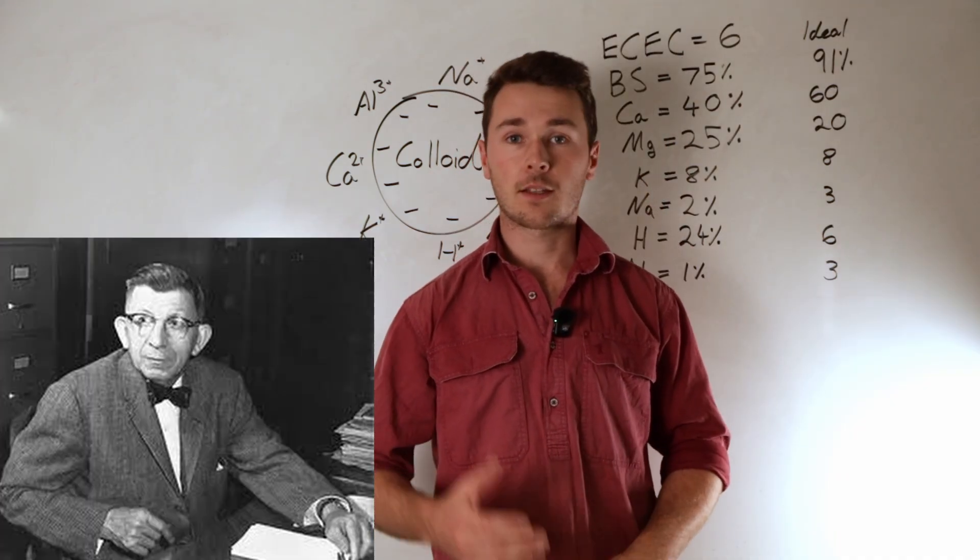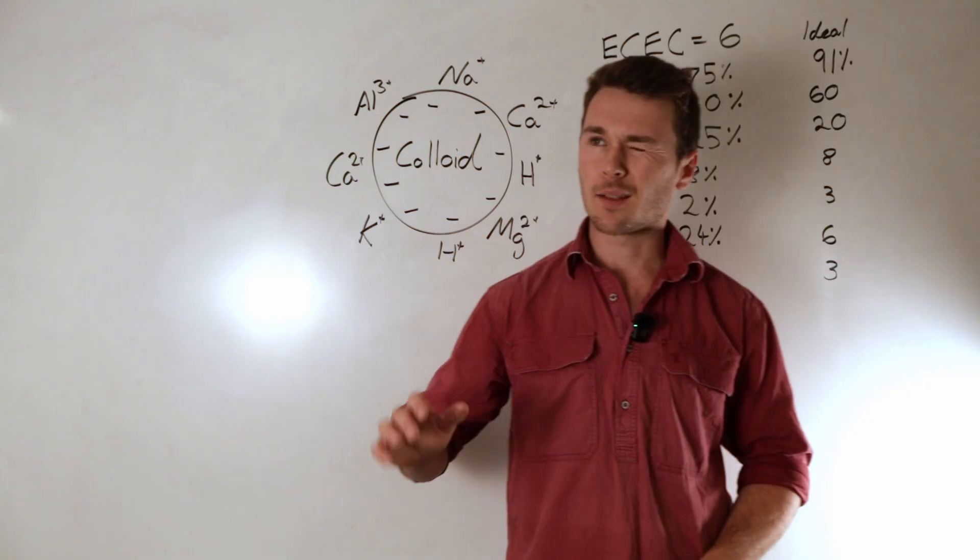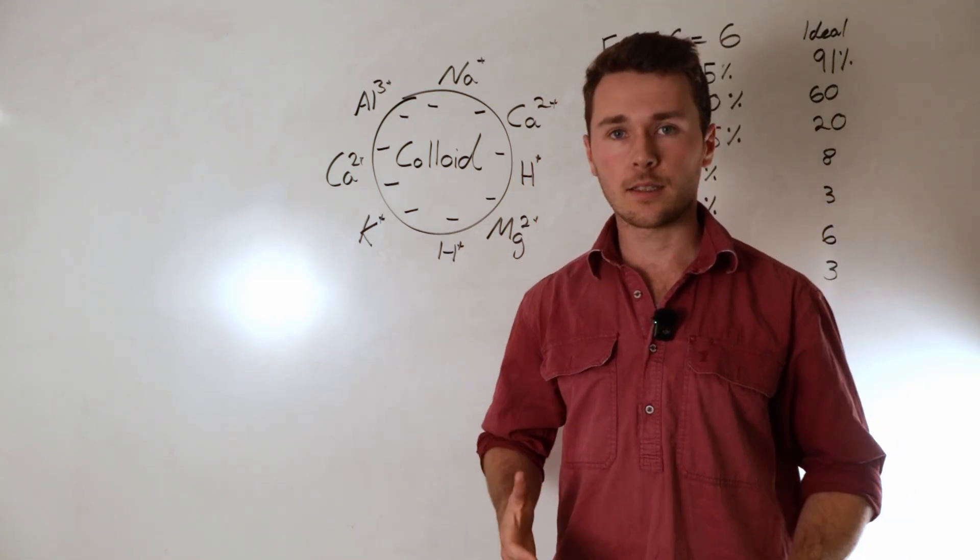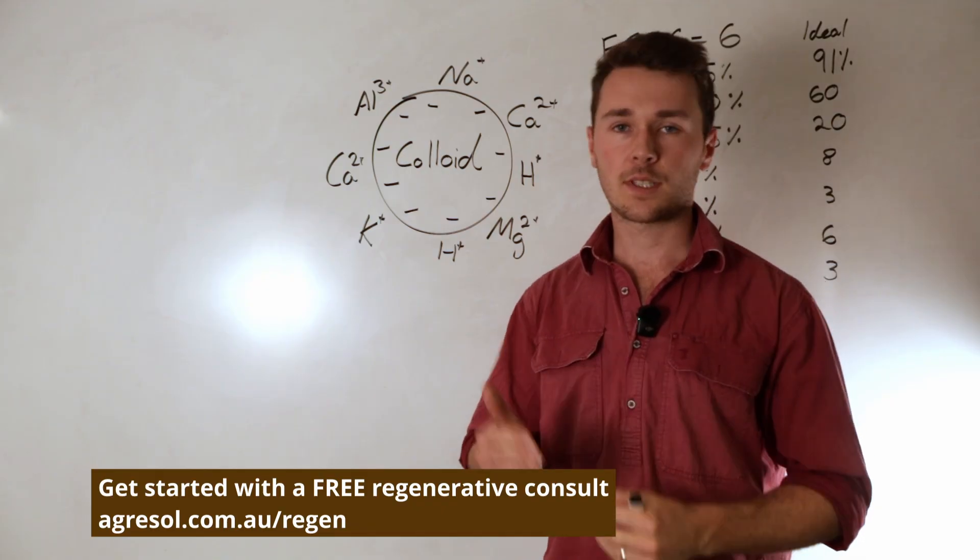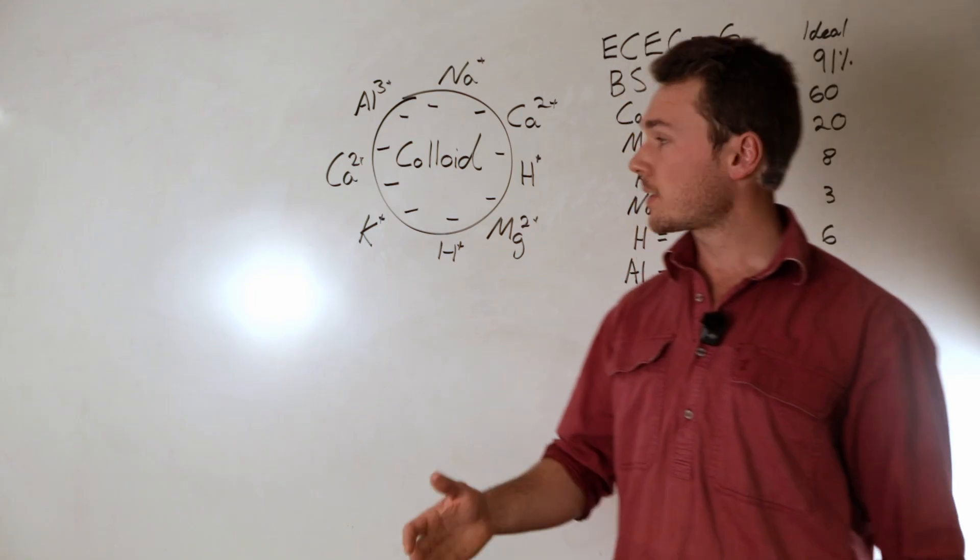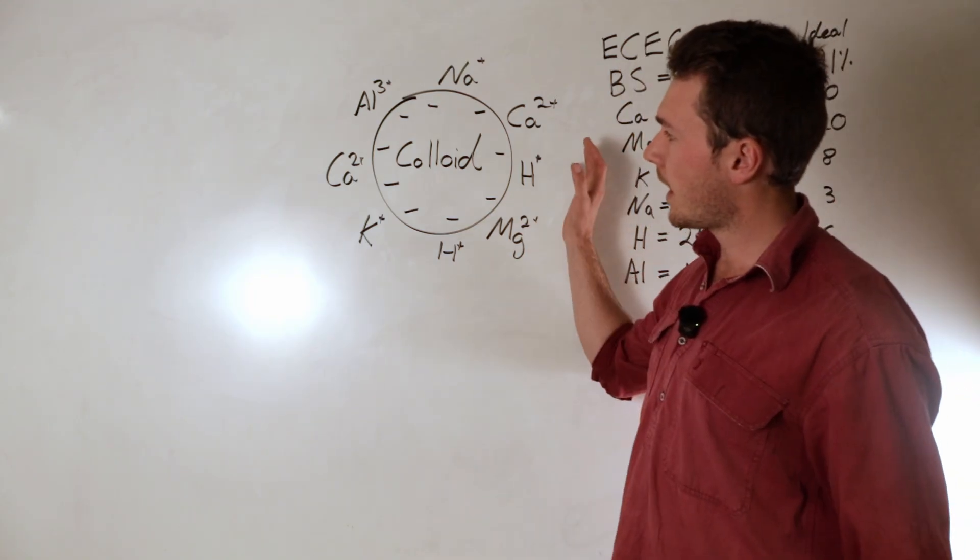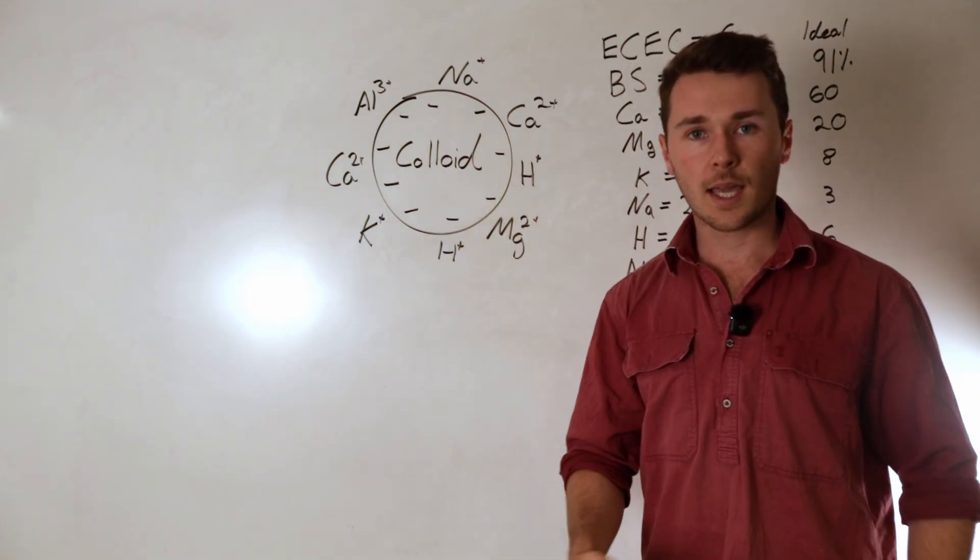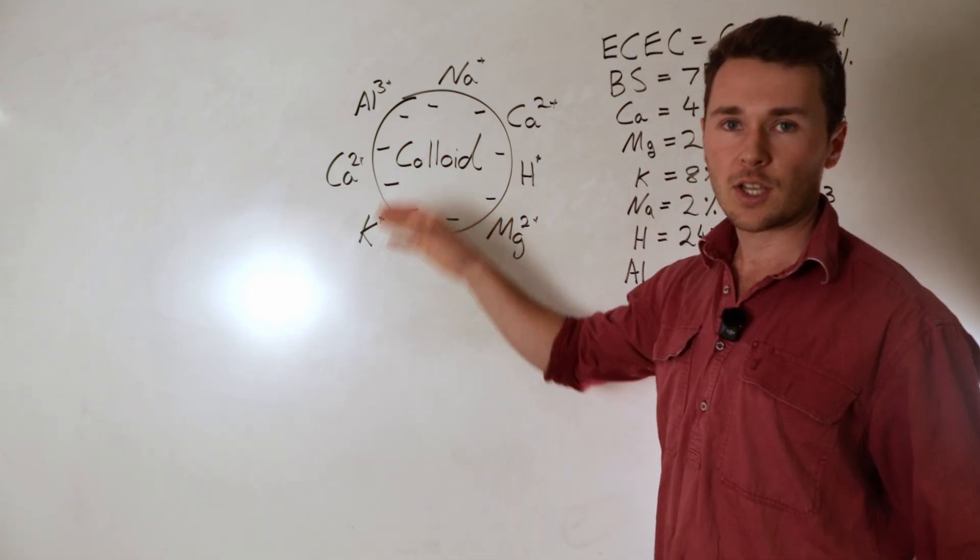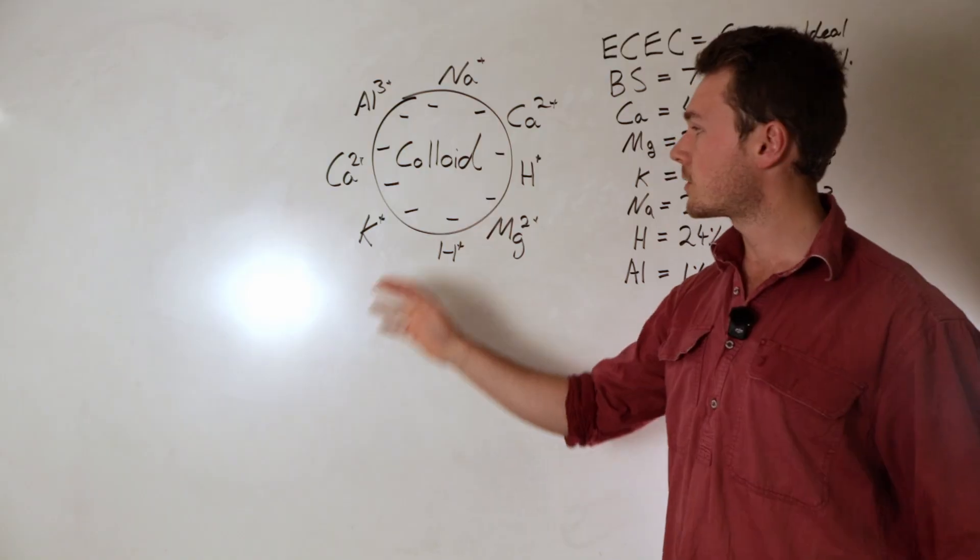Albrecht was a professor at the University of Missouri in the 1930s and 40s and he really popularized the idea of an ideal set of ratios between the cations on our clay colloids. So what this means is that in any soil we have clay. Clay has a negative charge as well as soil organic matter. There's negative charges on these particles called colloids.